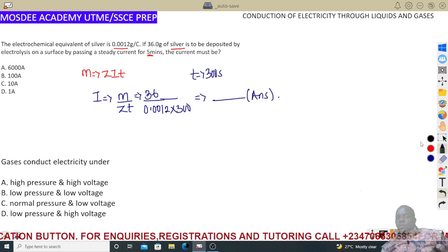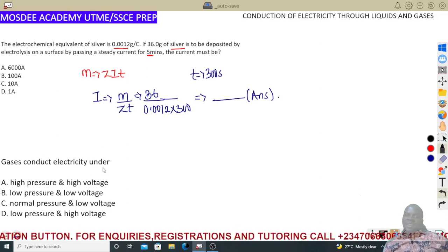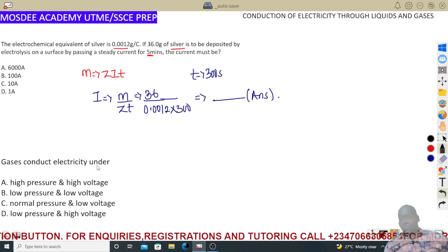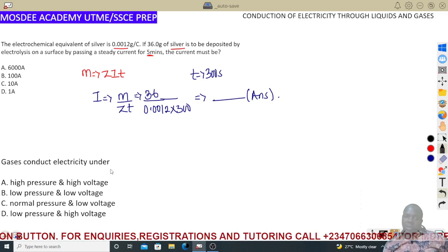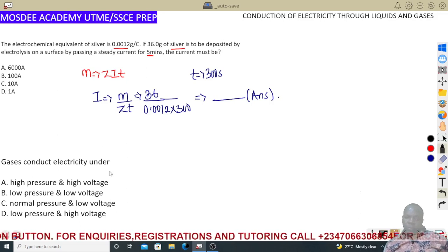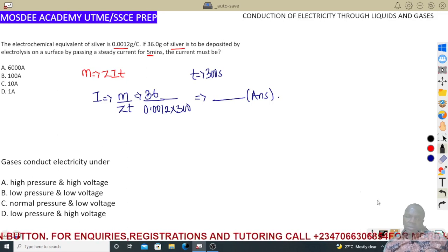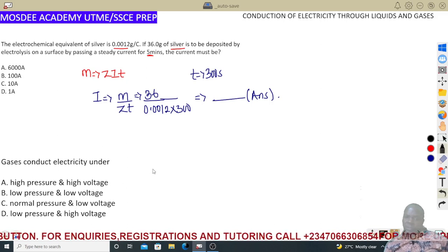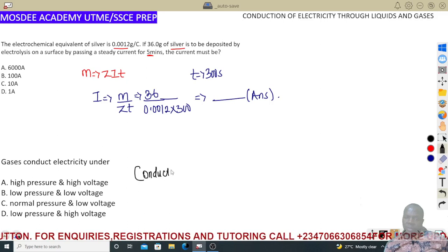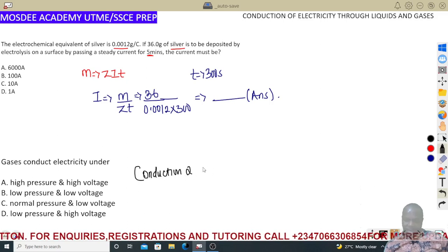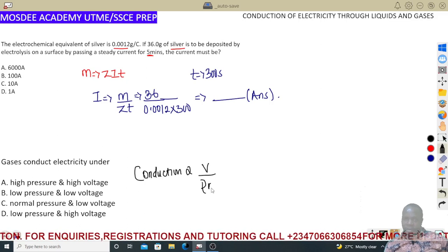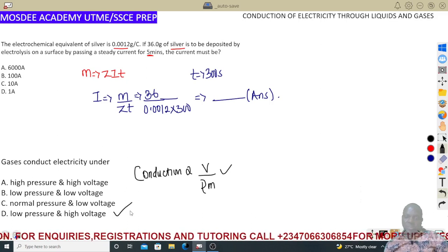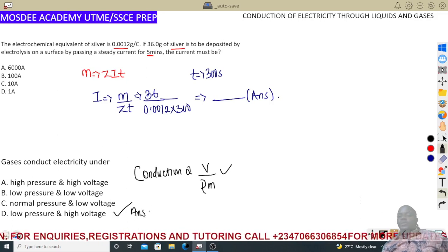Gases conduct electricity under certain conditions. They don't ordinarily conduct, but they conduct at high voltage and low pressure. Steady conduction is at high potential difference and low pressure — that is the answer to this question.